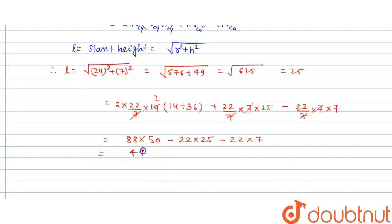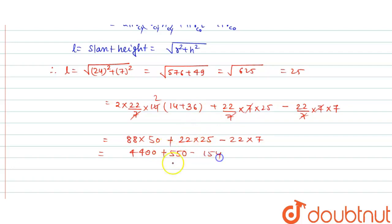Solving: 4400 + 550 − 154 = 4796. So the total surface area of the remaining solid is equal to 4796 centimeter square.